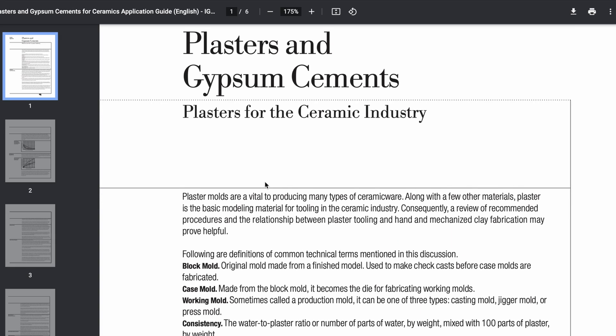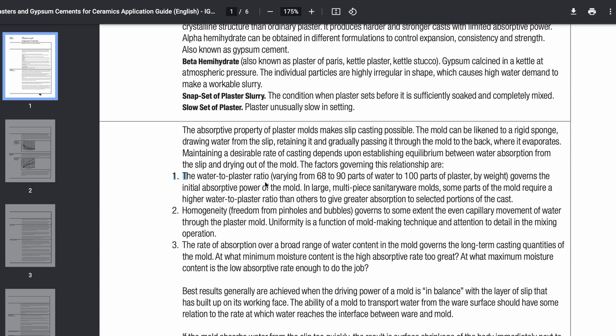So going over to this data sheet, in here it says the water to plaster ratio, which is one of the variables I'm worried about, varying from 68 to 90 parts of water to plaster by weight, so measuring by weight that's good, governs the absorptive power of the mold. So depending upon how much plaster we have, the mold will suck in more or less water.